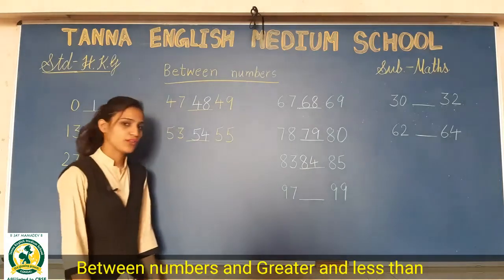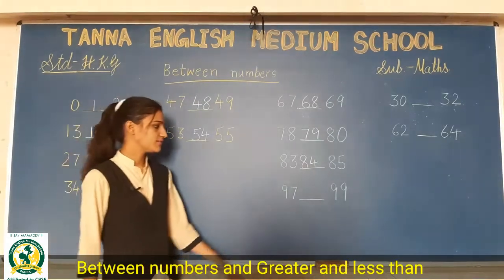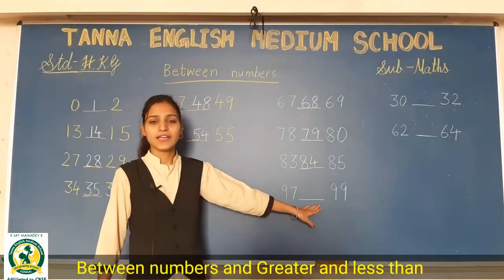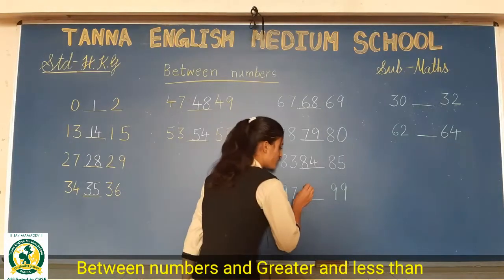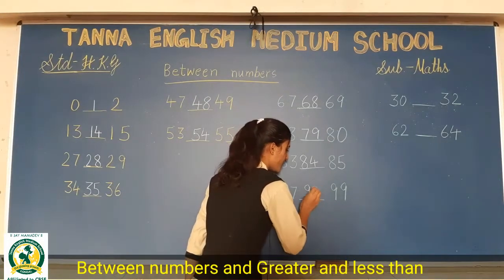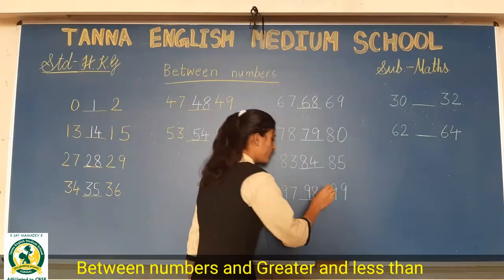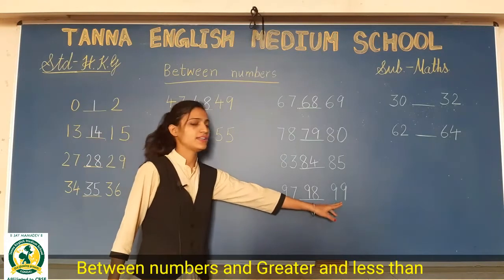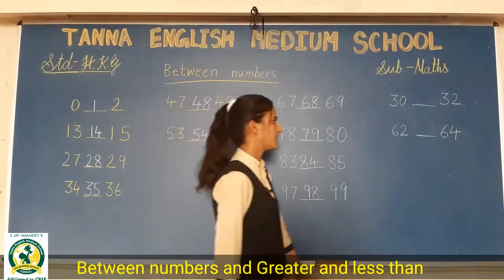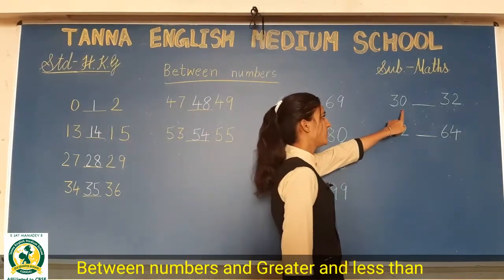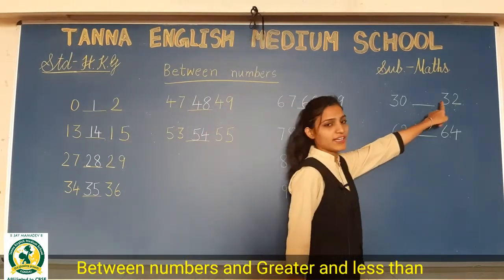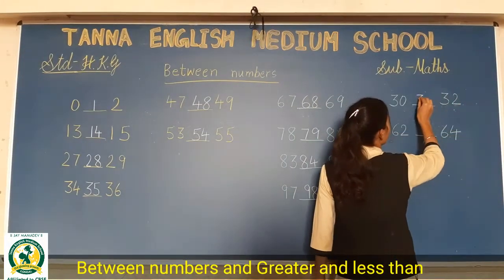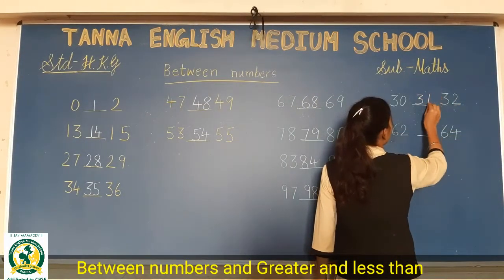Ok? Abhi dekho next. Isme kya aayega? 97 ke baad? 98 aayega, right? So, achche se numbers likhne hain aapko. Aur apne aap karna hai. 97, 98, 99. Counting to aati hai na? Phir 30, 31, 32. So, between mein 31 aayega, right?